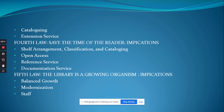Fifth Law — 'The library is a growing organism.' Implications include balanced growth: the collection should grow in all areas of subjects, keeping in view the needs and requirements of all readers as far as possible. Modernization: libraries may need to consider computerization of housekeeping jobs like acquisition, circulation, cataloging, etc. Staff: when a library grows, the sanctioned staff at some stage becomes inadequate, so an increase in staff should be considered.